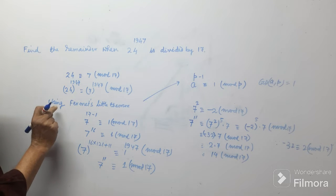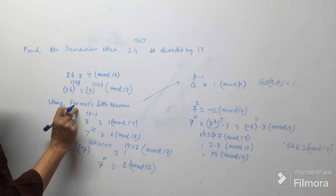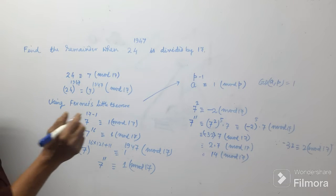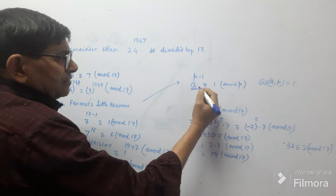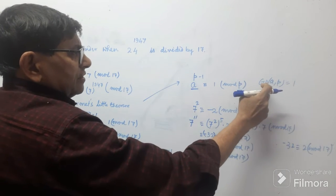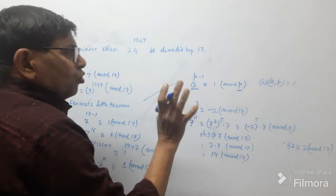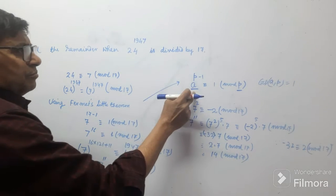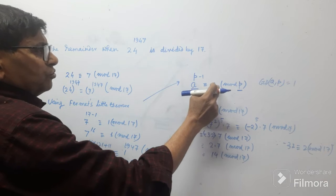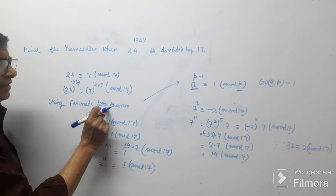Now I want to use Fermat's Little Theorem here. What is Fermat's Little Theorem? If A is a number and P is a prime, and GCD of A and P is 1 — that is, A and P are co-prime — then A to the power P minus 1 is congruent to 1 mod P. This is Fermat's Little Theorem.